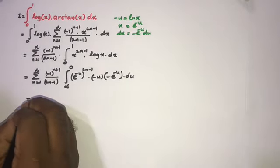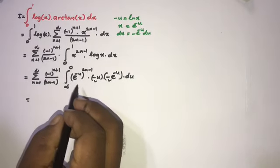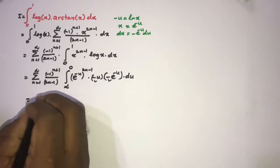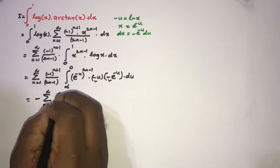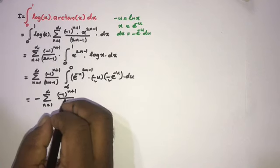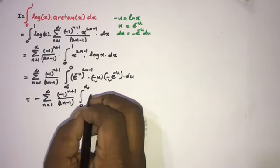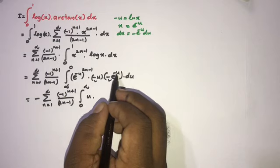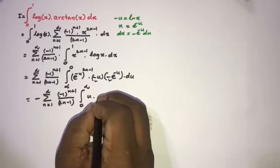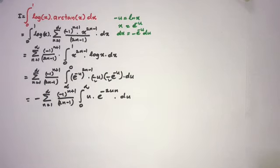The two minus signs cancel. Swapping the limits, we get minus the infinite sum from 1 to infinity of (-1)^(n+1) over (2n-1), times the integral from 0 to infinity of u times e^(-2un) du.